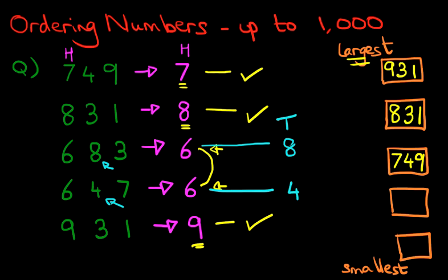Now, which of these two numbers is the larger number? Is it eight or four? Well, that's nice and easy. It is eight. So this number goes in next. That is six hundred and eighty-three. That just leaves one number left. Six hundred and forty-seven.